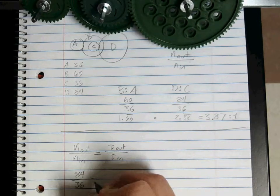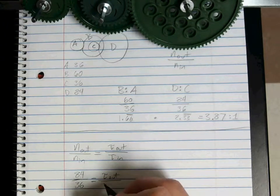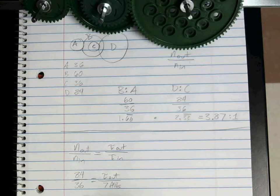Torque out, we don't know. Torque in, it says is 7 foot-pounds. So this is how you set it up.